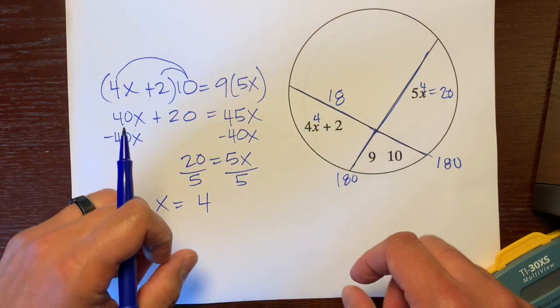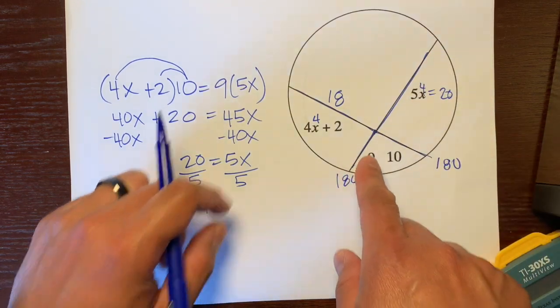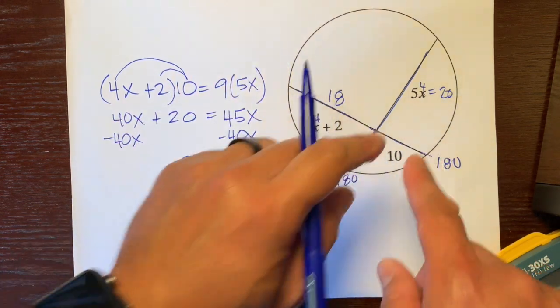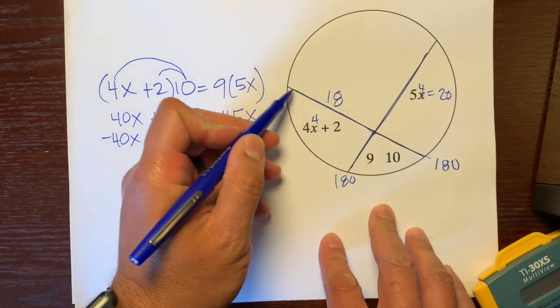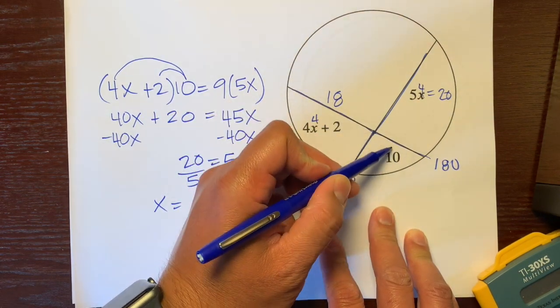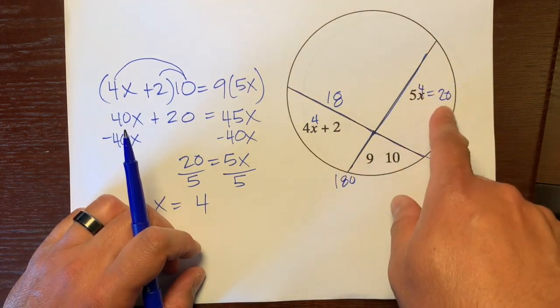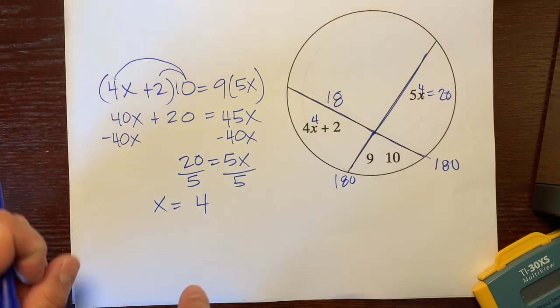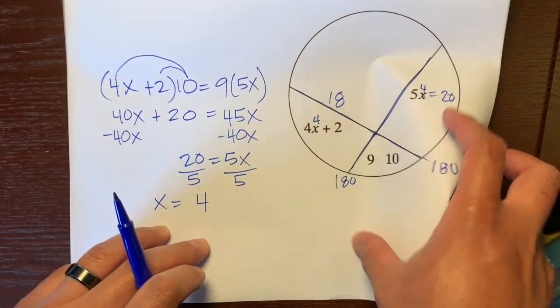So that doesn't mean the length of this chord is 180. That just means this piece times this piece is 180. Actually, the length of this chord right here is really 18 plus 10, which is 28. And the length of this chord is 9 plus 20, which is 29. Anyways, the answer here is 4. You know it's correct because the products are the same.